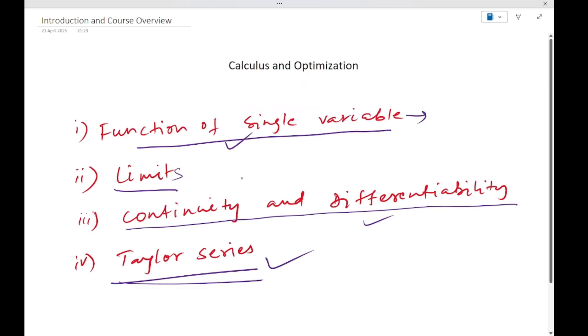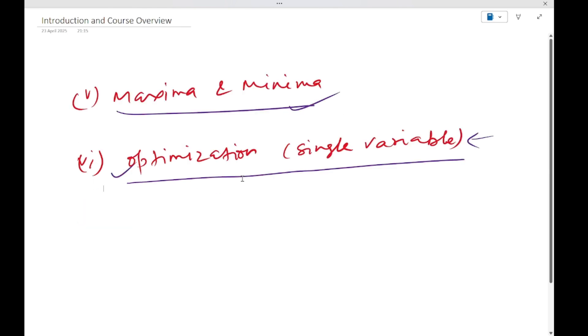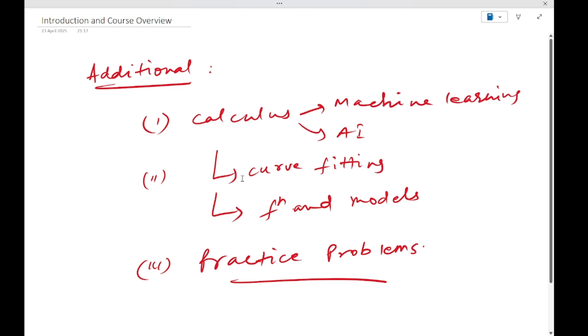This is the official syllabus of GATE DA for calculus and optimization. But apart from this, we will also see some additional things that are needed for future courses that we are going to bring - machine learning and AI - where we need some higher level of calculus like partial derivatives.